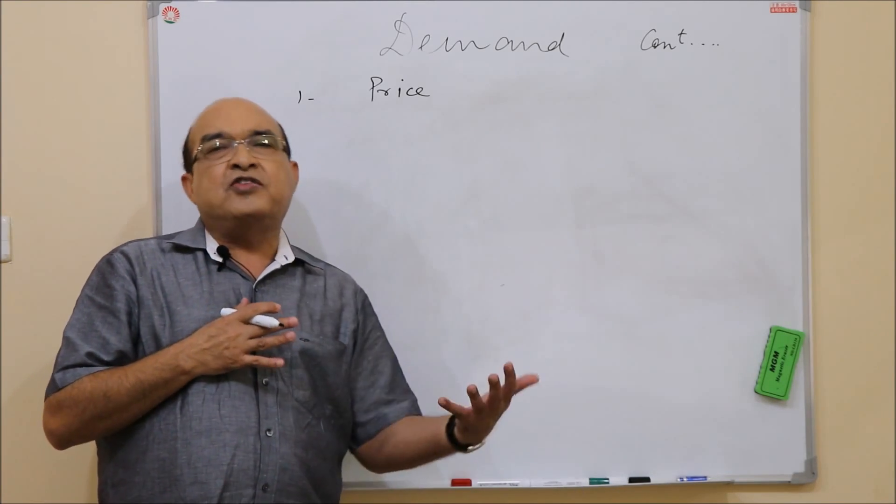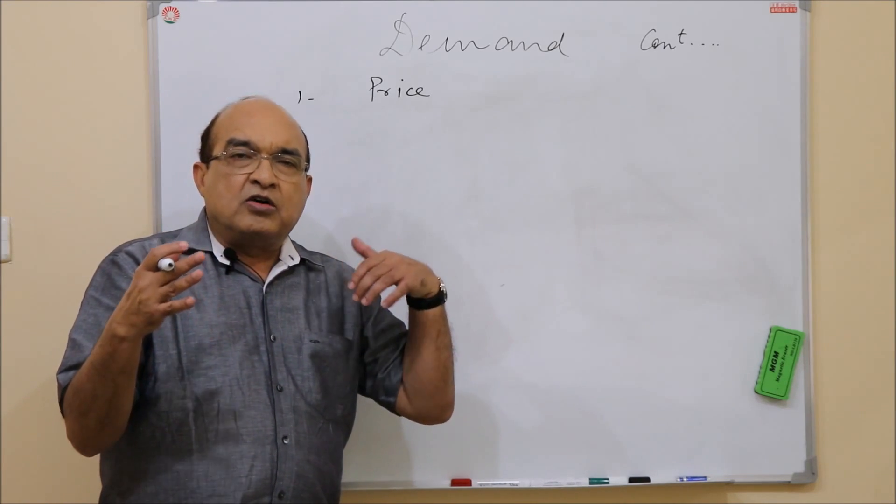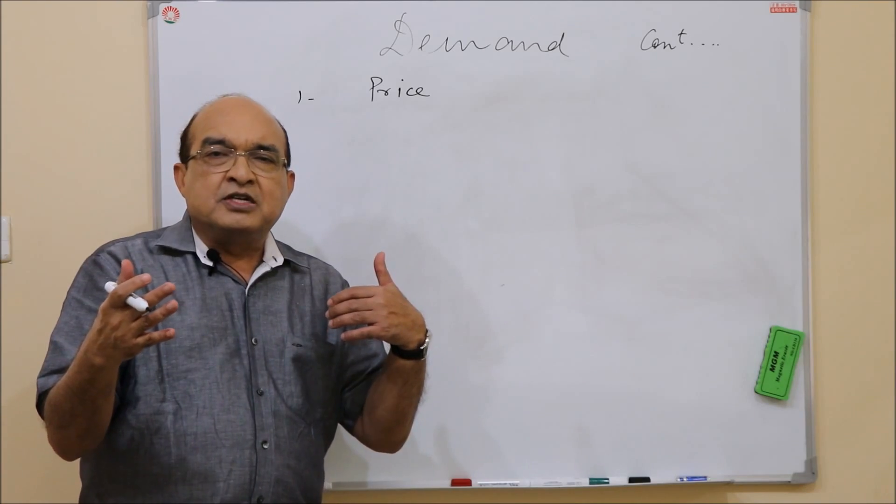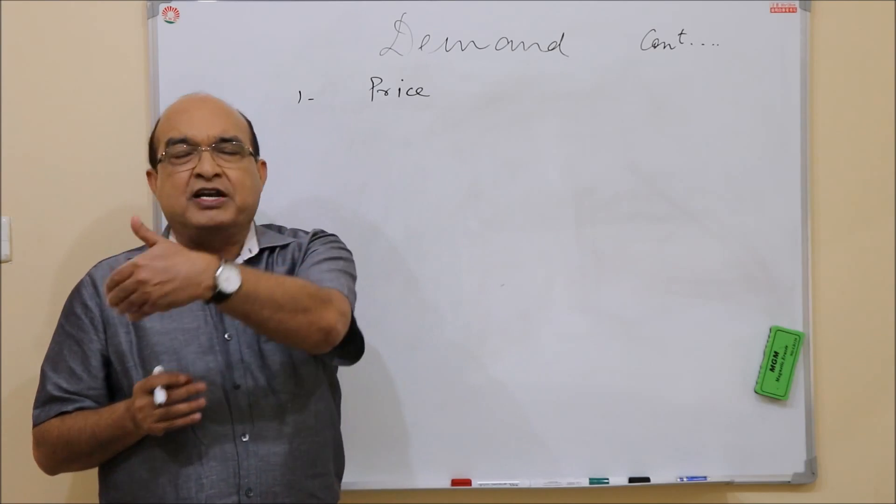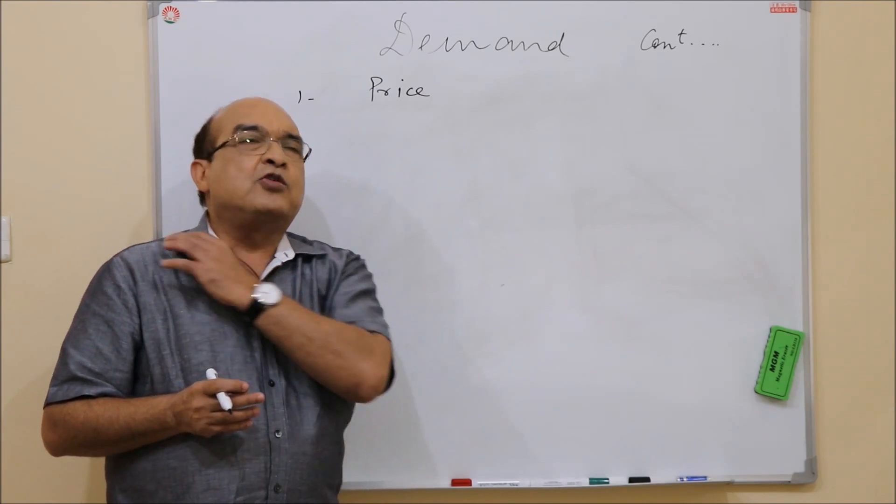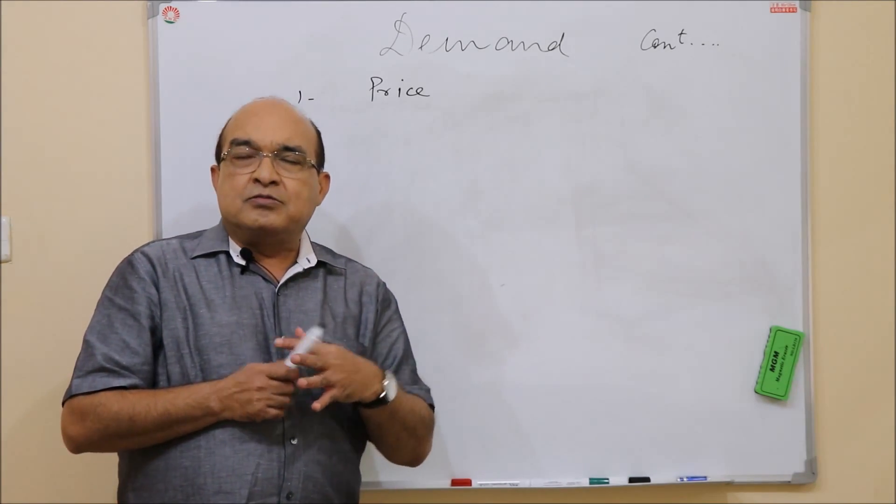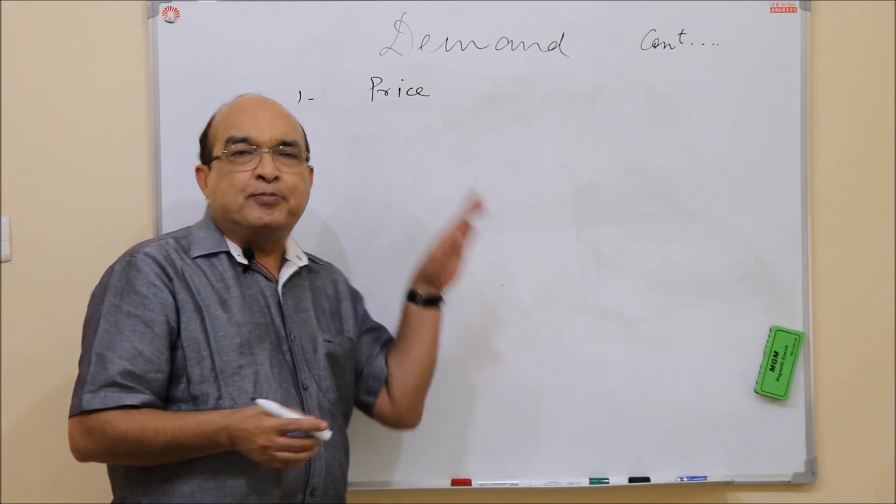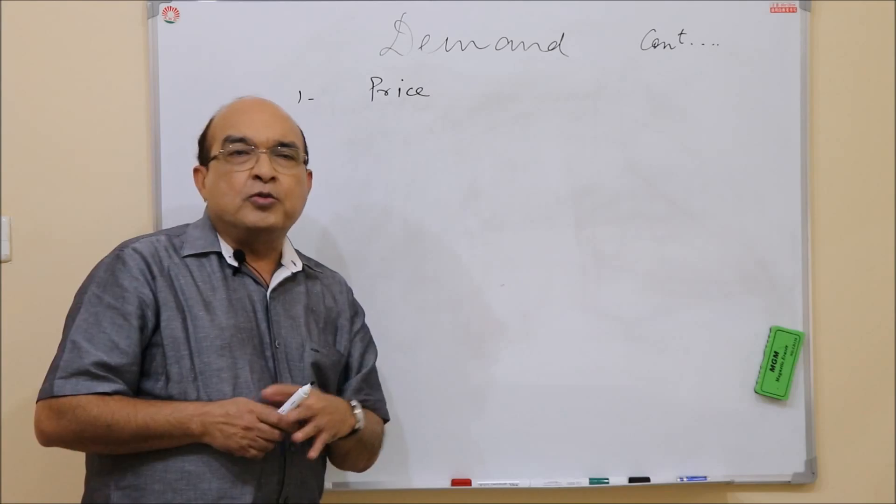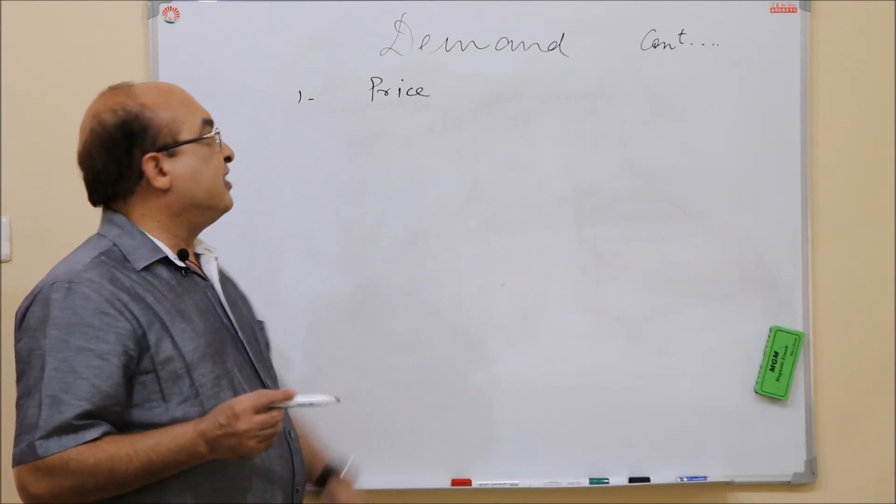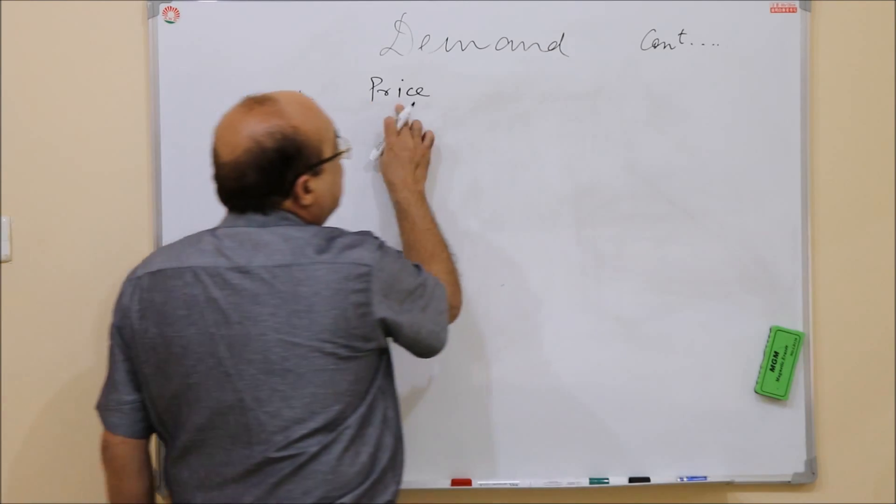Because it is the equilibrium price for the commodities in the market that would determine what quantities of various goods and services would be produced in the economy. And that, together with the supply curve, would determine the equilibrium price in the market. And that would determine in what proportion the various factors of production would be deployed for the production of these goods. So that is why price is important.